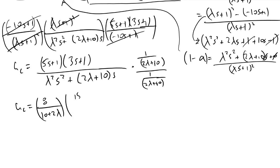When you do that, after some more algebra, we will arrive at a form where we will have 8 divided by (10 plus 2*lambda) times (15s squared plus 8s plus 1) over (8s), times finally another term, 1 over (lambda squared over (10 plus 2*lambda)*s plus 1).